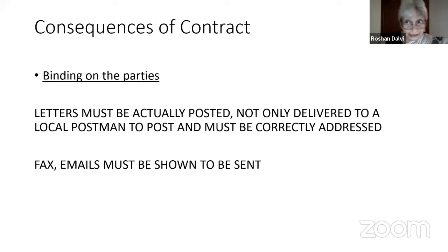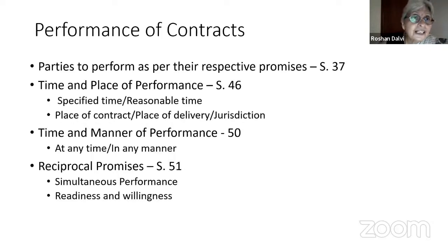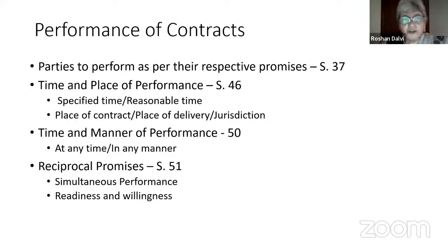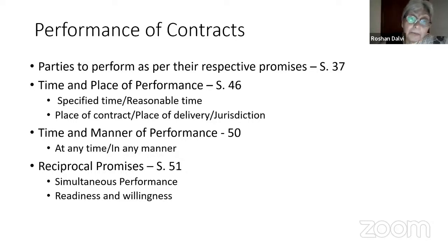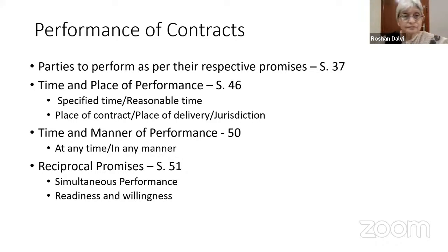So there is a contract in the first place, and there is no contract in the second place, under the agreement of arbitration. The performance of contracts — parties will perform their respective promises. There is a time for performance and a place for performance. When there is a specified time or a reasonable time, contracts will have to be performed. The place of contract is important, especially the place of delivery, as that gives jurisdiction to the courts and to the arbitration seat.